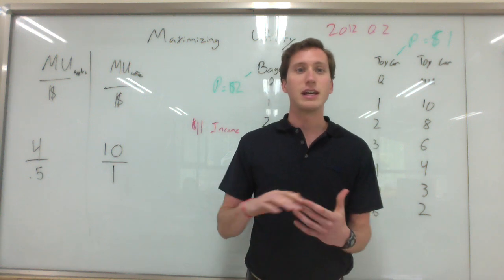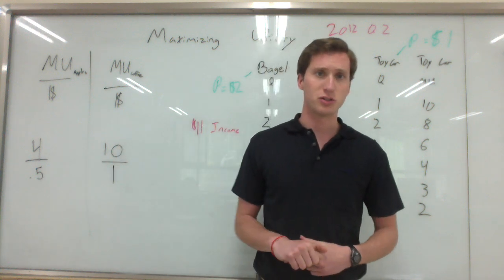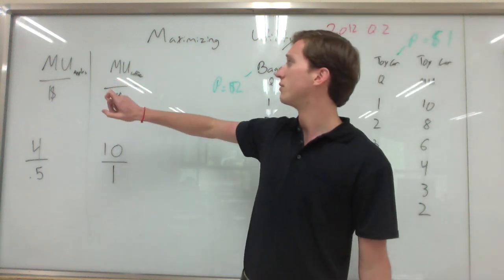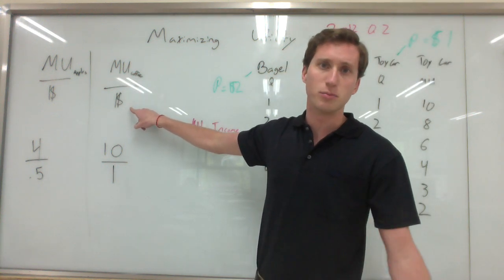Marginal utility is the satisfaction received from consuming just one additional good or service. When thinking about maximizing utility, I think of it in terms of marginal utility, that's what I have MU here for, over dollars or price.